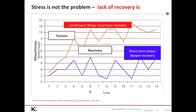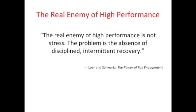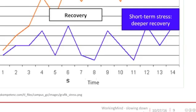The top line shows continuous stress without proper recovery. The bottom line shows short-term stress with deeper periods of recovery. That makes all the difference. As these authors say, the real enemy of high performance is not stress. The problem is the absence of disciplined, intermittent recovery, or intervals of recovery. The world's top athletes understand this. But what about us? Well, our natural ability to recover is so strong that even a short period that breaks the stress cycle is helpful.